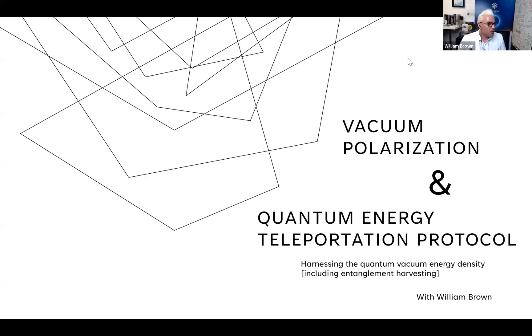The two key experiments that we're going to be reviewing today are vacuum polarization and the quantum energy teleportation protocol. This is harnessing the quantum vacuum energy density and harnessing the intrinsic entanglement of the quantum vacuum, what is actually called entanglement harvesting or entanglement forming, using the infinite amount of quantum entanglement of the vacuum state to entangle quantum systems, and to even teleport energy between them.